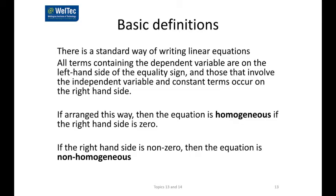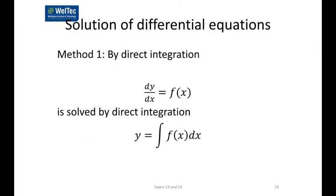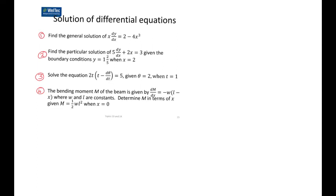When writing a linear equation, all terms containing the dependent variable go on the left-hand side of the equals sign, terms involving only the independent variable and constant terms go on the right-hand side. If the right-hand side is zero, the equation is homogeneous; if the right-hand side is non-zero, it is non-homogeneous. The first way to solve these differential equations is by direct integration. If dy/dx equals some function of x, then y is the integral of that function. In the video I will do numbers 1 and 3, and we'll do numbers 2 and 4 in class.